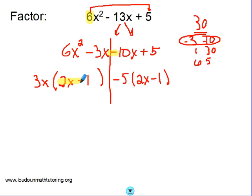You know you've done factor by grouping correctly if you look inside your parentheses and these expressions match. 2x minus 1, 2x minus 1. So that's going to become one of your factors, the piece that matches. And then when you ignore those two pieces, what do you have left? You have 3x minus 5.